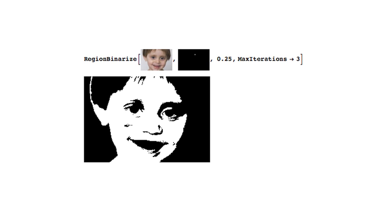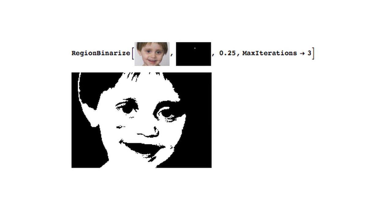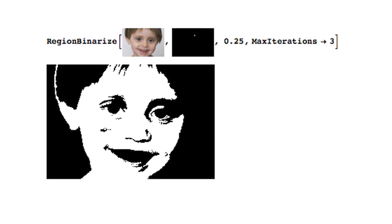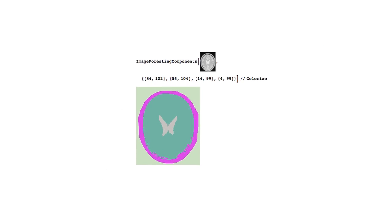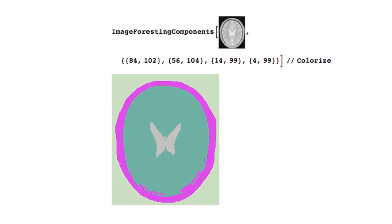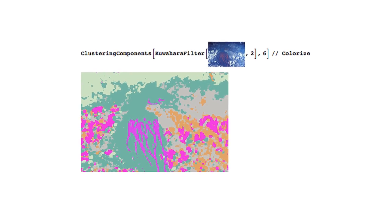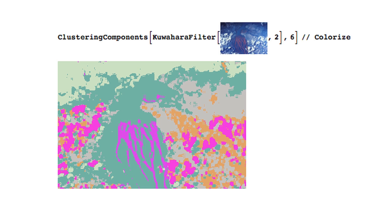For image segmentation we have introduced binary and multi-region segmentation which are based on watershed, region growing, active contours, and so on. We have also introduced a rich set of functions that help with post-processing of segmentations and analyzing the result of a segmentation.